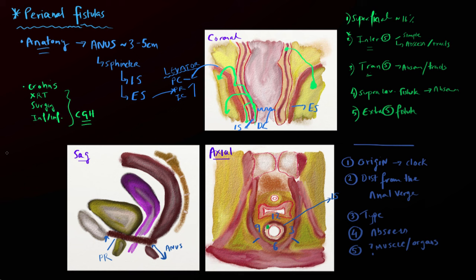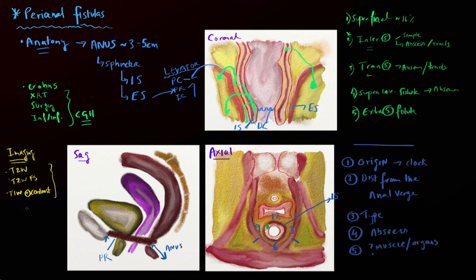Finally, let's touch on how these abscesses and fistulas look on imaging. We use standard MR sequences. The T2-weighted sequence is particularly important — fluid is bright on T2, so any tracks containing fluid will also be bright. T2-weighted sequences with fat saturation are particularly good for looking at the actual fluid in the tracks, while general T2-weighted sequences are very good for defining the anatomy — the sphincters with the inter-sphincteric fat and the external sphincter. We also use T1-weighted sequences both with and without contrast, which are particularly good at delineating the tracks. It's really just a combination of these sequences in different planes.